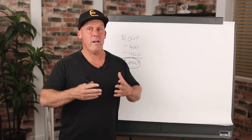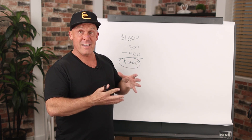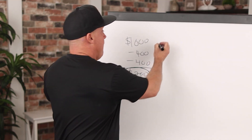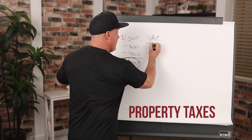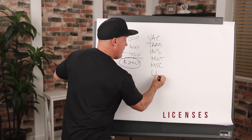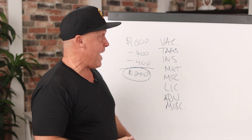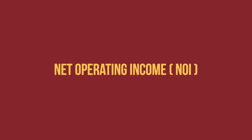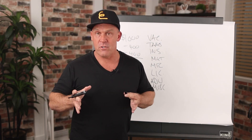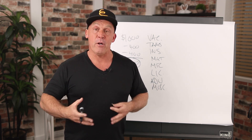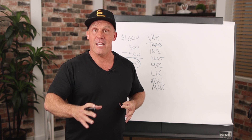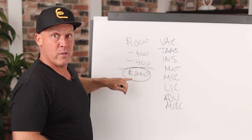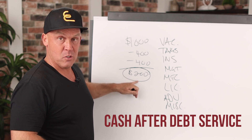Expenses relating to a property will vary greatly, but you'll want to deduct all of them to produce a real cash flow number. Typical expenses include your vacancy rate, property taxes, insurance, management, maintenance, licenses, advertising, and other miscellaneous fees. Subtracting expenses from gross income gives you the net operating income, or NOI. NOI does not include debt service — that's any payments to the mortgage company, financing on the property, or preferred payments to private investors. If there is debt service, it's subtracted after expenses, giving you the actual cash flow, which we call cash after debt service.